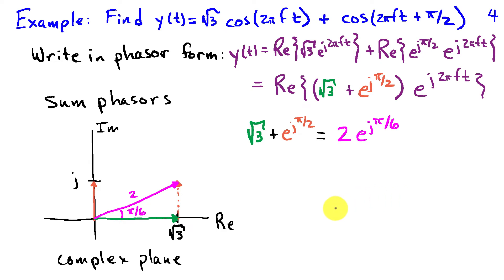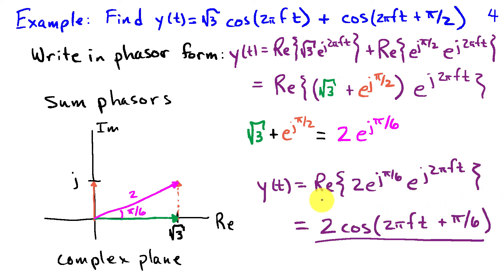Now let's do the sum of those two terms. Square root of 3 in the complex plane is on the real axis at distance square root of 3. e to the j pi over 2 is on the imaginary axis at unit distance. If we add these two phasors, we can do that using vector addition as I've sketched here. I have a right triangle whose one leg is square root of 3, the other leg is 1. Therefore, the hypotenuse has distance 2, and the angle turns out to be pi over 6. Therefore, I know that y of t is expressed in terms of a complex sinusoid with phasor 2 e to the j pi over 6. Converting that back to a cosine, it's simply 2 cosine 2 pi ft plus pi over 6.